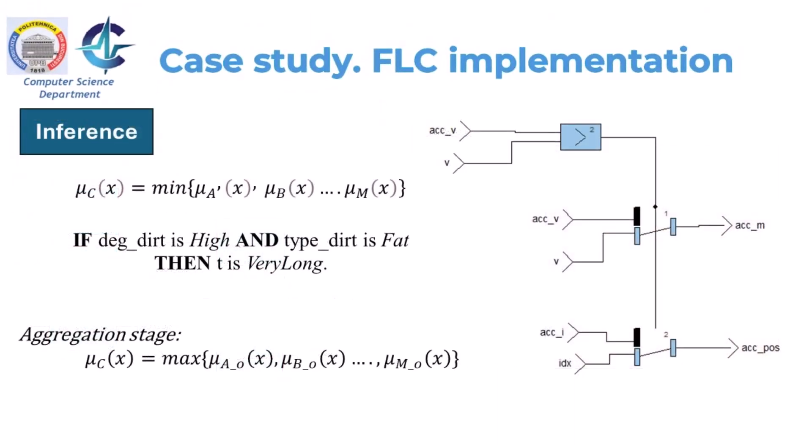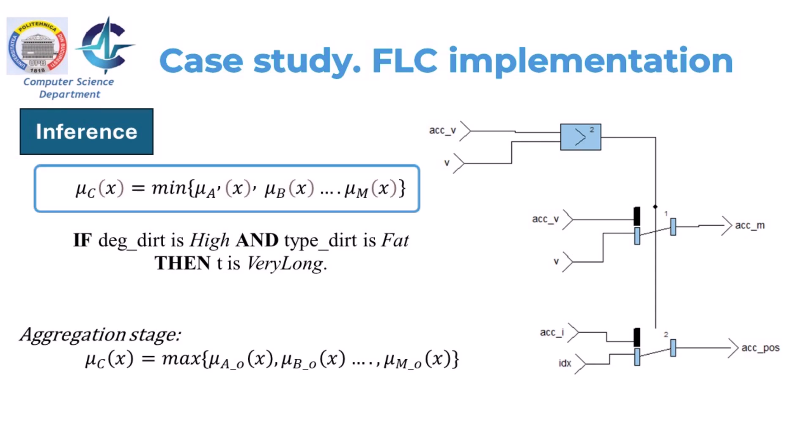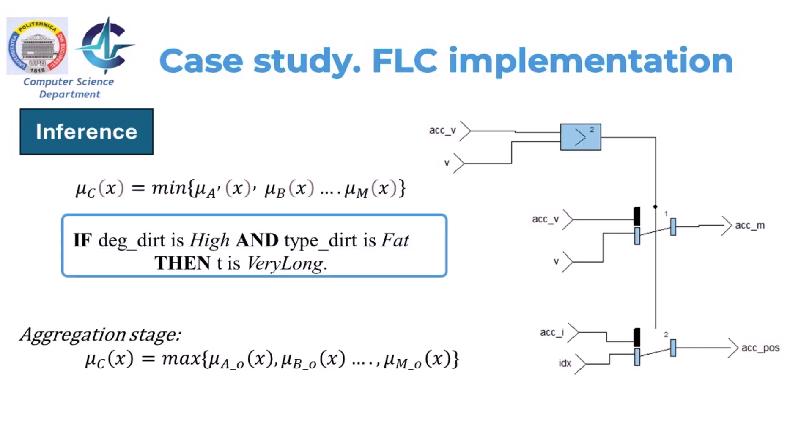We are ready for the inference stage. The Mamdani-type inference method using min-max operation is used. The equation computes mu as the minimum of individual membership values mu_a, mu_b, and so on, where m is the number of variables. In our case, n equals 2, representing degree of dirtiness and type of dirtiness. We implement all nine rules using the membership values for each fuzzy set.